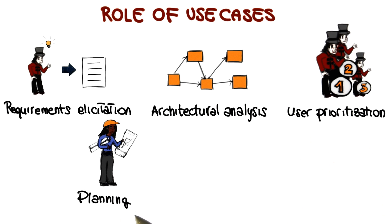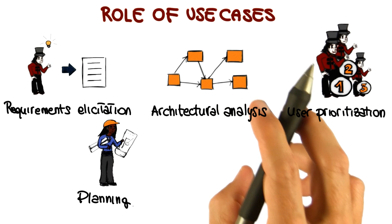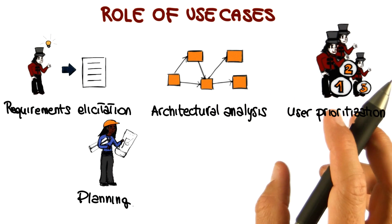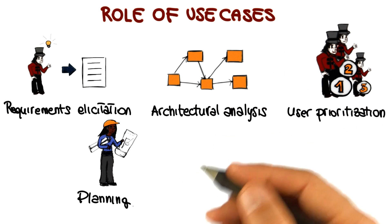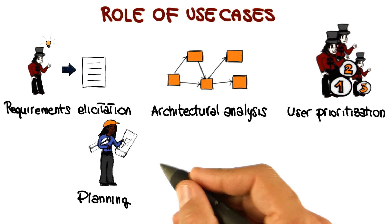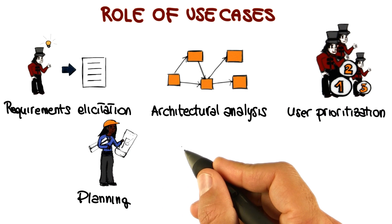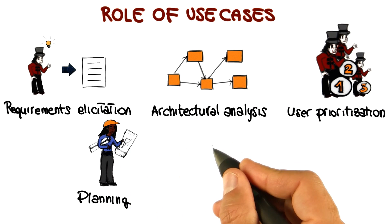Related to this point, use cases can be used for planning. If I know which pieces of functionality I need to build and in which order, I can better plan the development of my system. We will see how this becomes very important in many different software life cycles, both in the unified software process and also in more agile development processes.